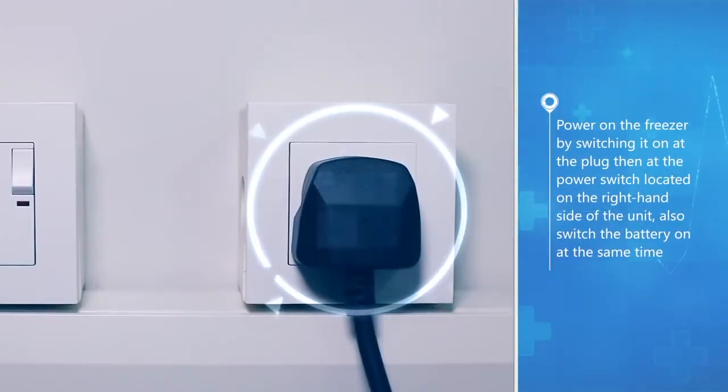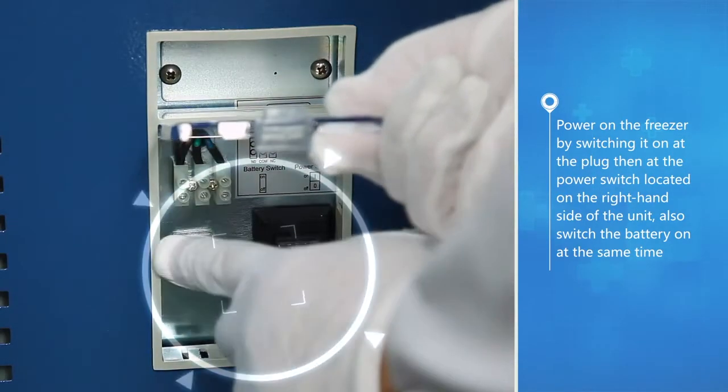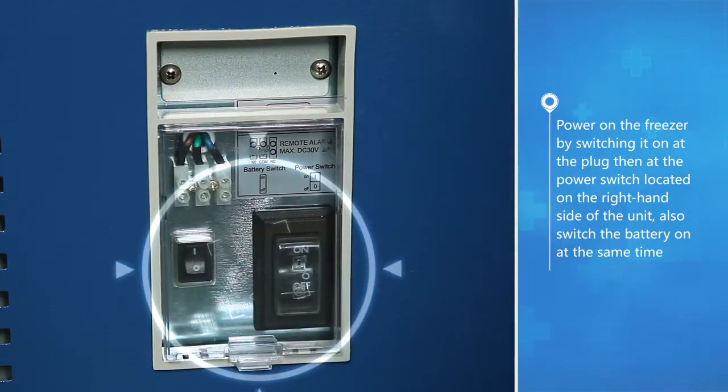Power on the freezer by switching it on at the plug then at the power switch located on the right-hand side of the unit. Also switch the battery on at the same time.